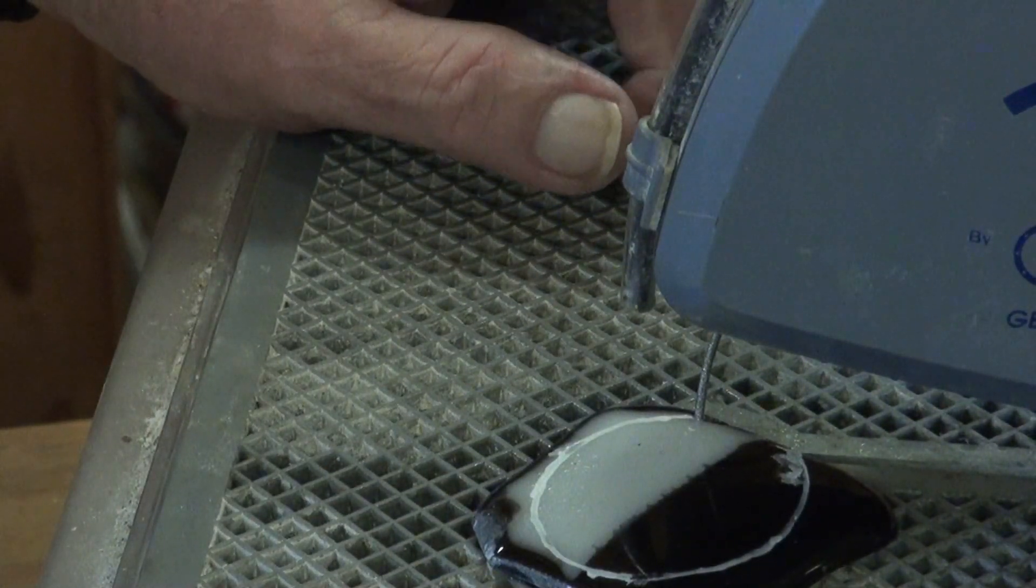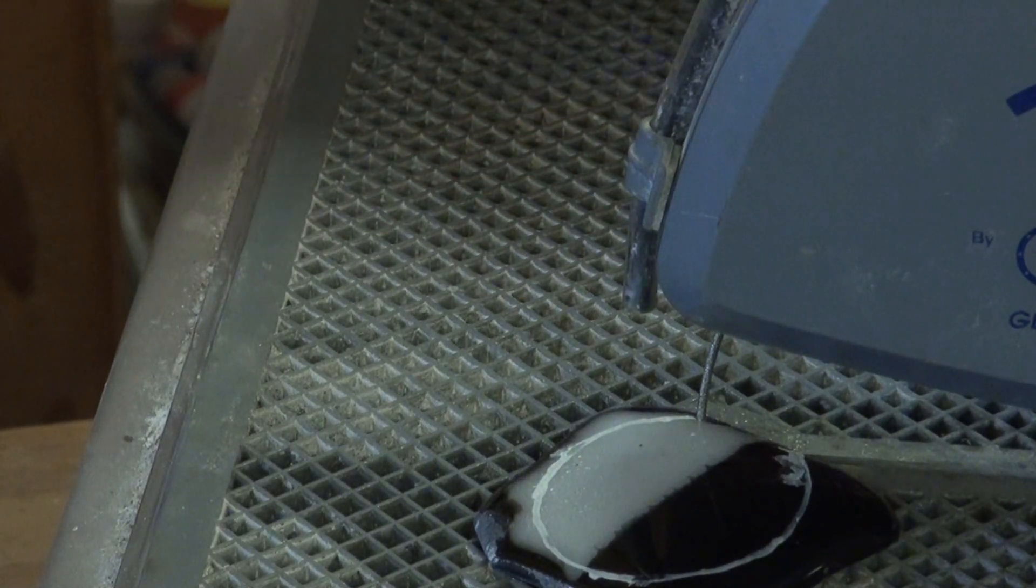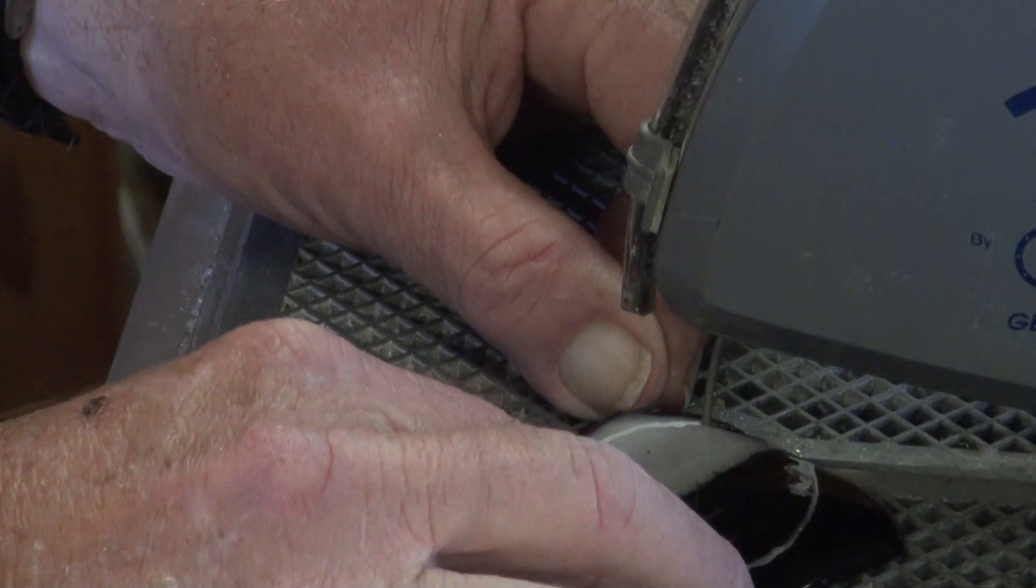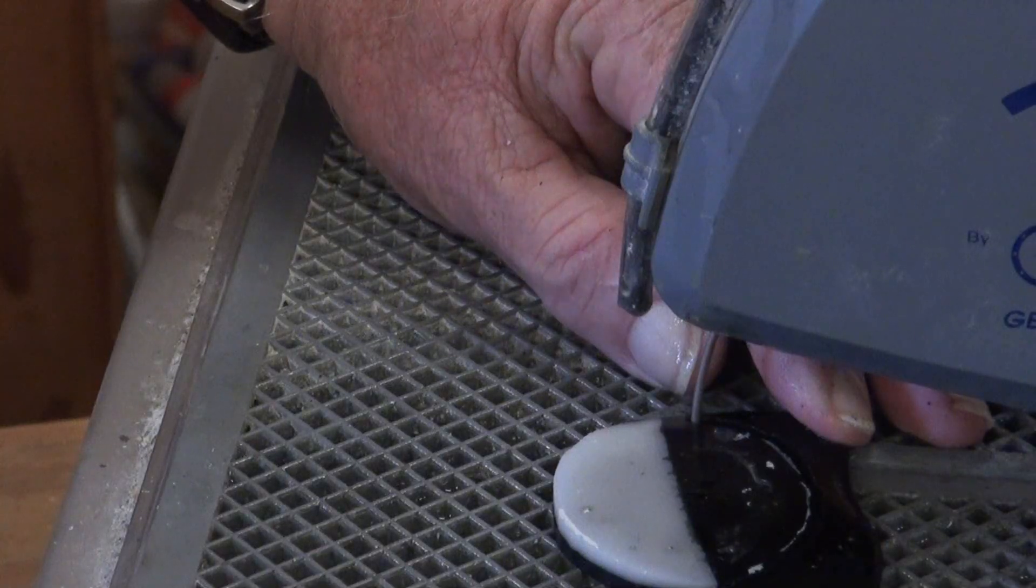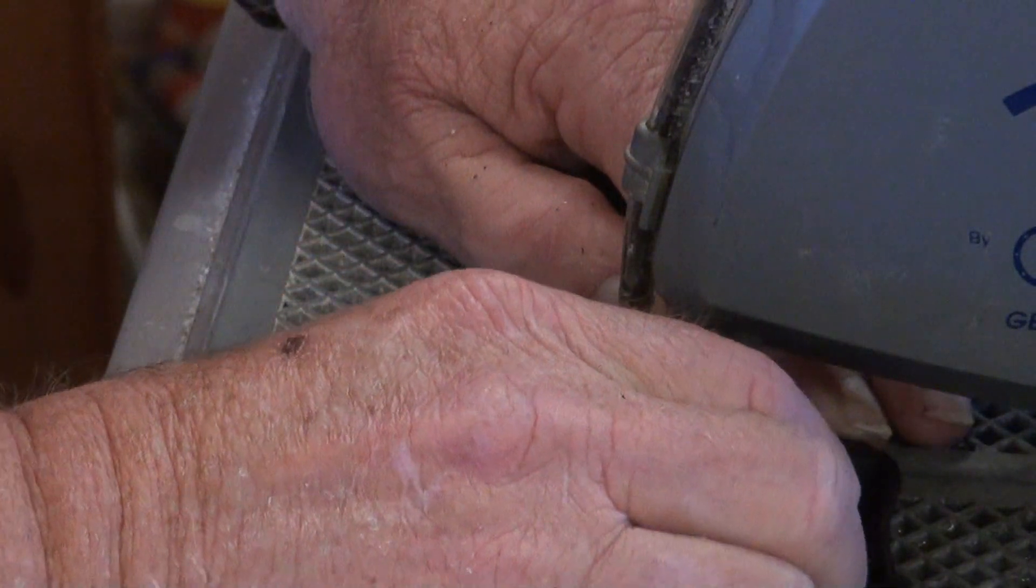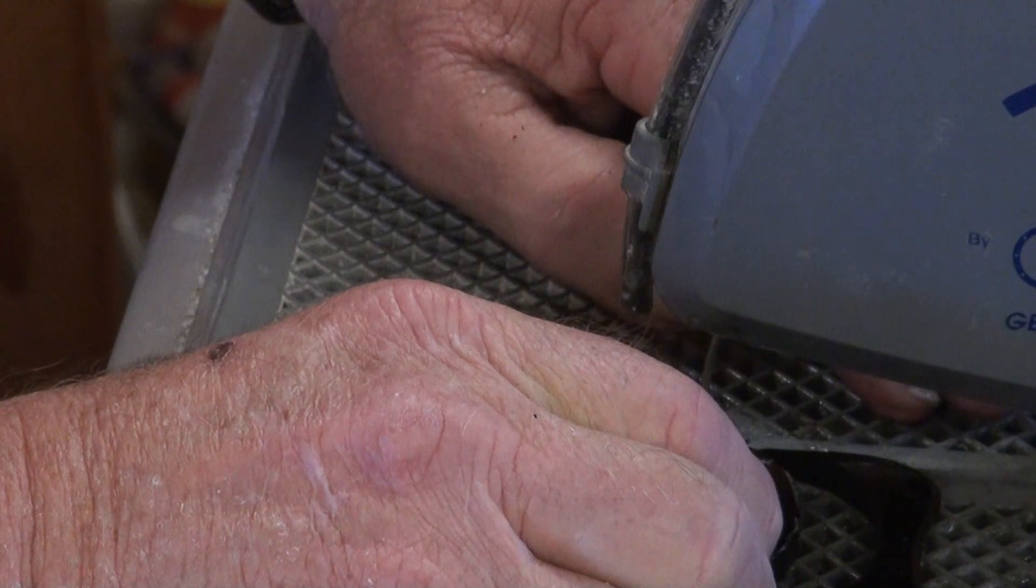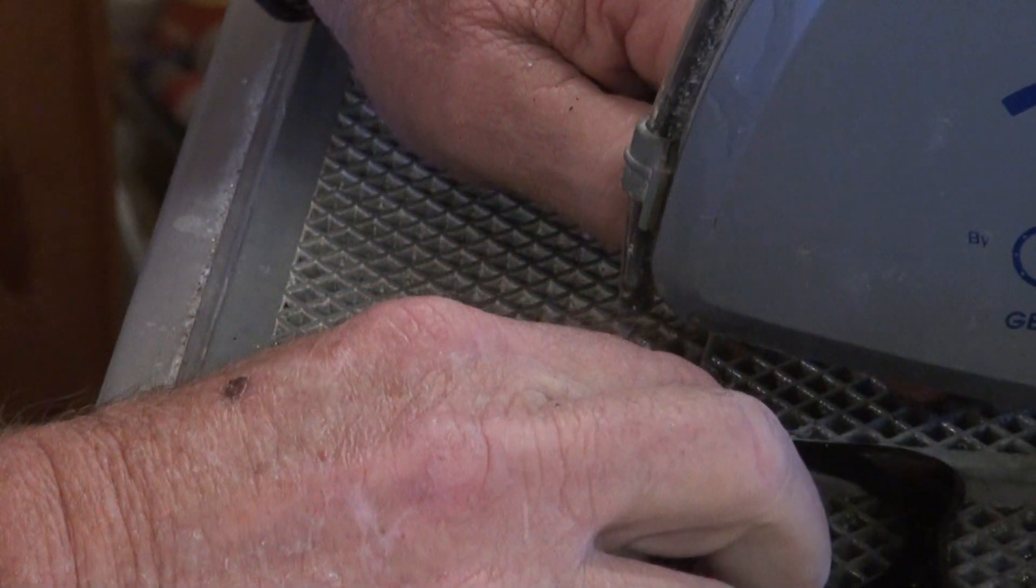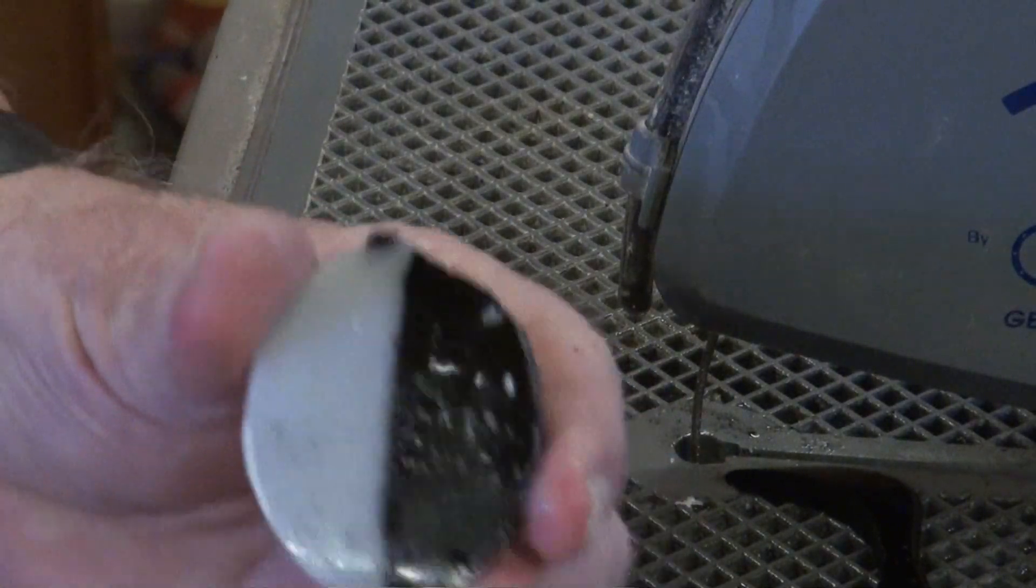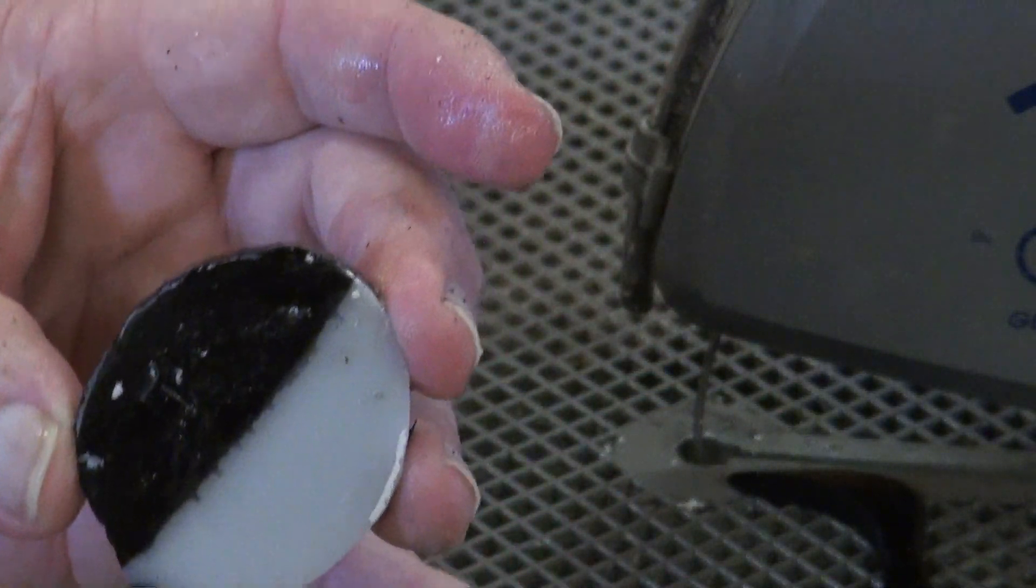When you're using a ring saw of any kind, you want to let the blade do the cutting. Not push too hard. That's the easy way to snap the blade. So we'll cut a little more and finish the cut. Okay, we've finished cutting the piece. The next job will be to grind it and get it nice and smooth around the edges. So we'll do that next.